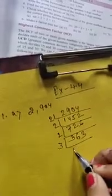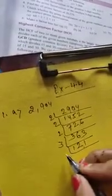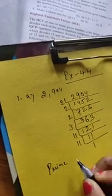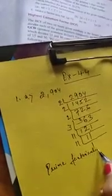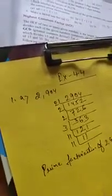Then we can use the 3 times table: 3 times 1 is 3, 3 times 2 is 6, 3 times 1 is 3. After using the 3 table, it is not possible to divide further with 3. Then we use the 11 times table: 11 times 11 is 121, and 11 times 1 is 11. This is the method of prime factorization. So the prime factorization of 2904 equals 2 × 2 × 2 × 3 × 11 × 11. This is your correct answer.